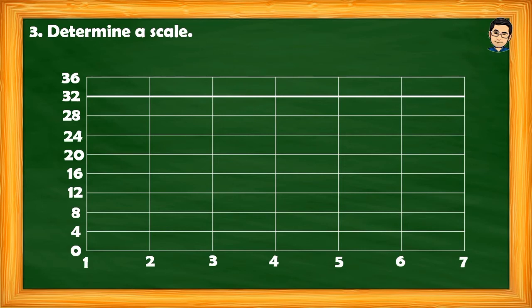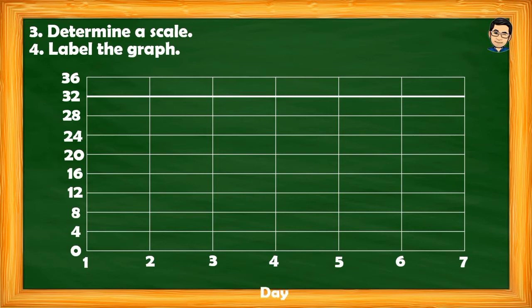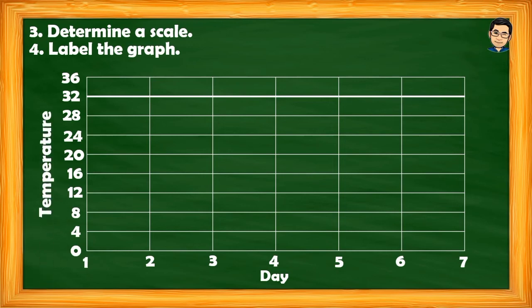The days are on the horizontal axis — Days 1 to 7, as you can see. On the next step, we label the graph. The numbers on the horizontal axis represent the days, so that axis is labeled 'Day' — this is the time axis. The vertical axis shows the temperature: 0, 4, 8, 12, up to 36, expressed in degrees Celsius, so that axis is labeled 'Temperature (°C).'